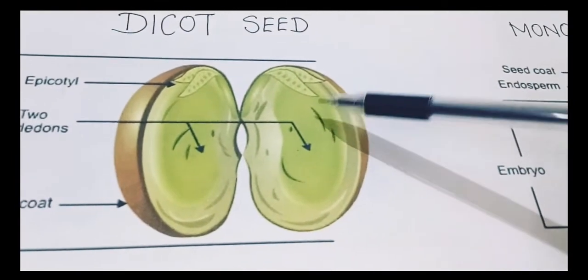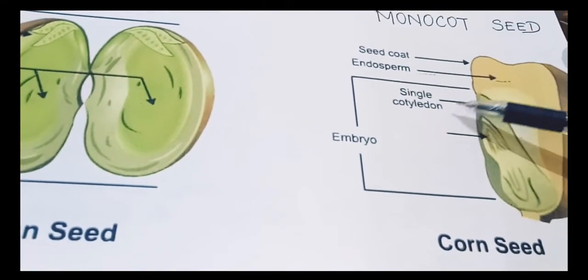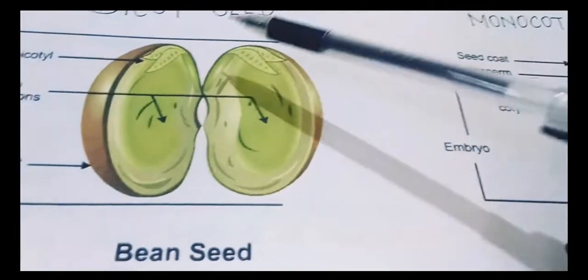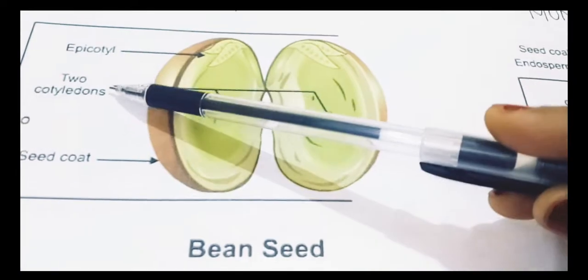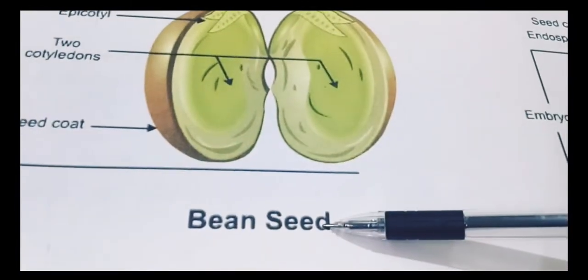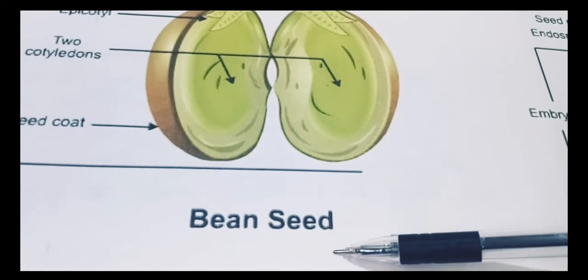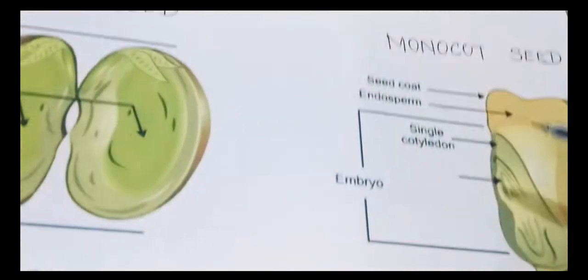So the seeds are of two types. One is the monocot seed, means one leaf seed which is having one single cotyledon. And the second is the dicot seed, means two leaves and it is two cotyledons. So the examples of dicot seeds: beans, gram, peas, they all are the examples of dicot seeds.